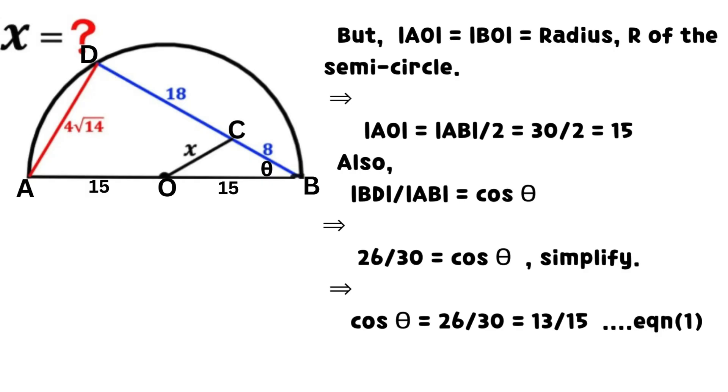Also, BD divided by AB equals cosine theta. Hence, 26 divided by 30 equals cosine theta. Simplify. Cosine theta equals 26/30, which equals 13/15. We call it equation 1.